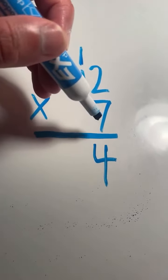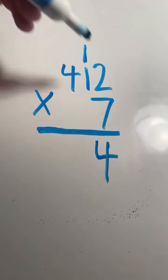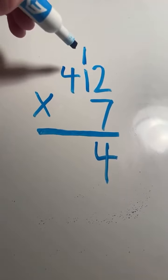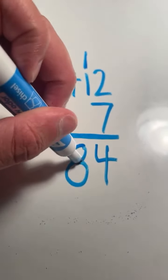Next we multiply 1 times 7 and we have to add the one that we carried over. 1 times 7 equals 7. 7 plus 1 equals 8. Again, no regrouping needed in the tens place because our product is less than 10.